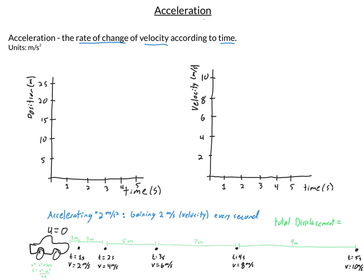But between 1 and 2 seconds, the velocity starts out at 2 meters per second — we're already going relatively fast — and we accelerate another 2 meters per second up to 4 meters per second, so we go a little bit further, about 3 meters. Notice how as the velocity at the beginning and end of each one-second period is higher, we cover more and more distance with each passing second. With each passing second, we go faster and cover more distance.